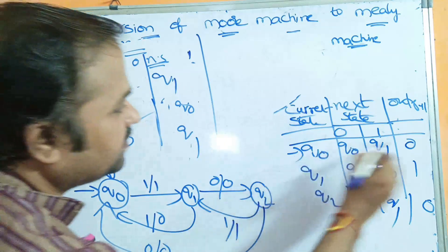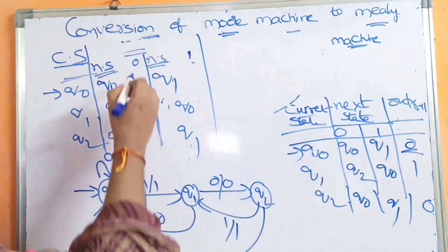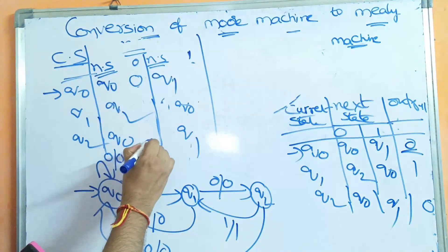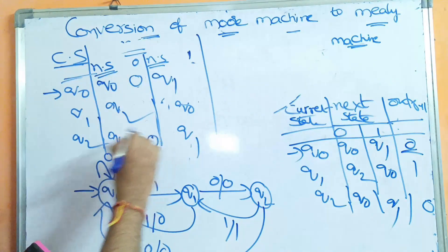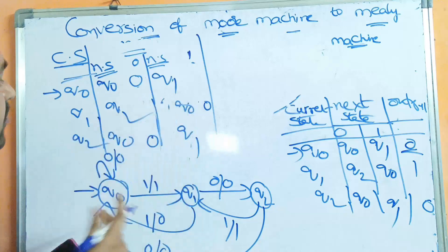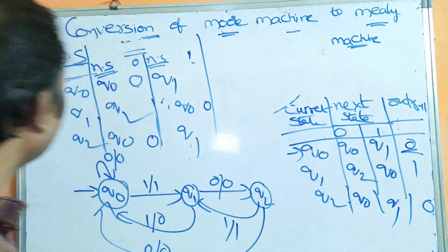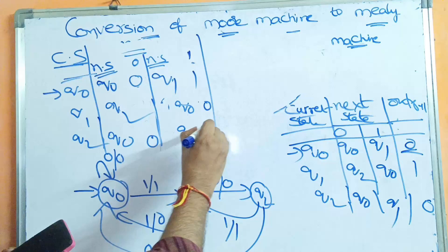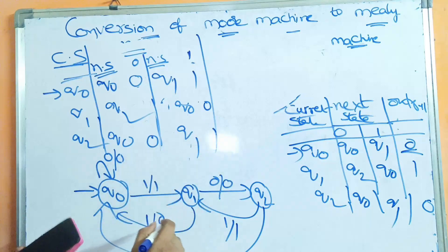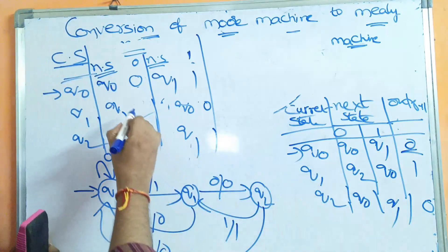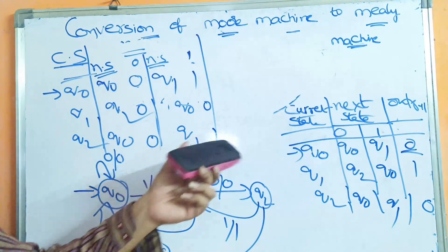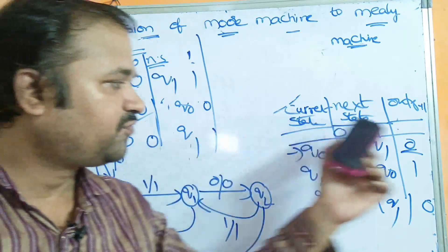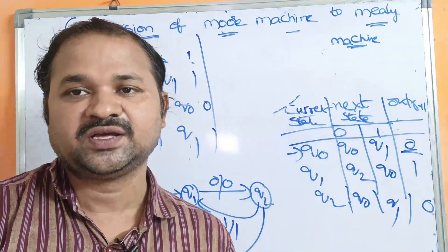The output of Q0 is 0, so wherever the next state is Q0, the output is 0. Q1 output is 1, and Q2 output is 0. This is the Mealy machine transition table corresponding to this Moore machine transition table.